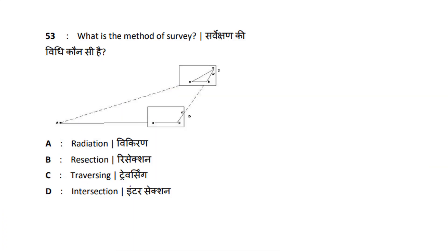What is the method of plain table survey? Options are: Radiation, Resection, Traversing, Intersection. For the plain table, I will cover the theory portion of the survey. What is the method of resection?